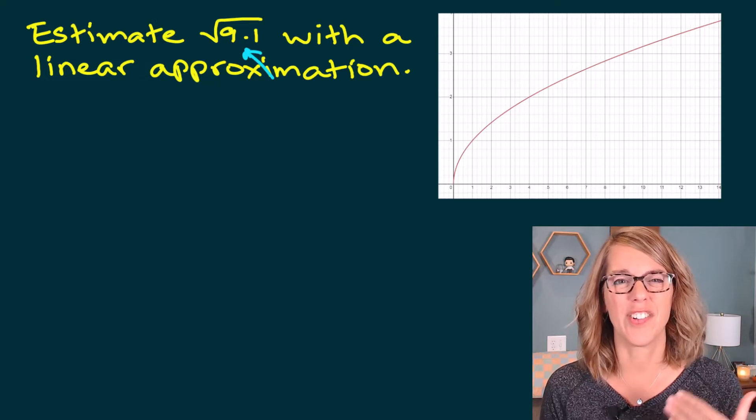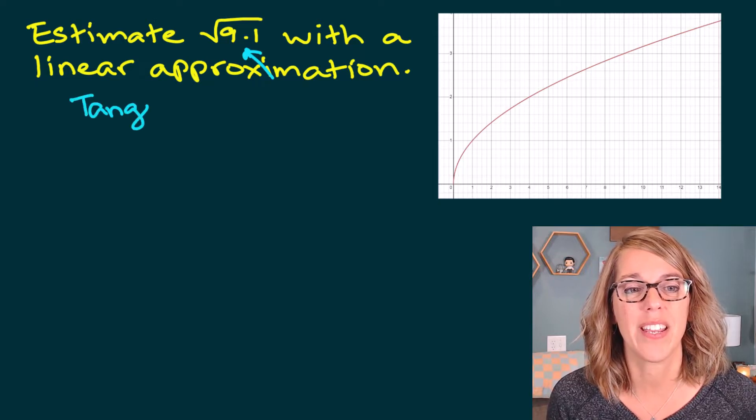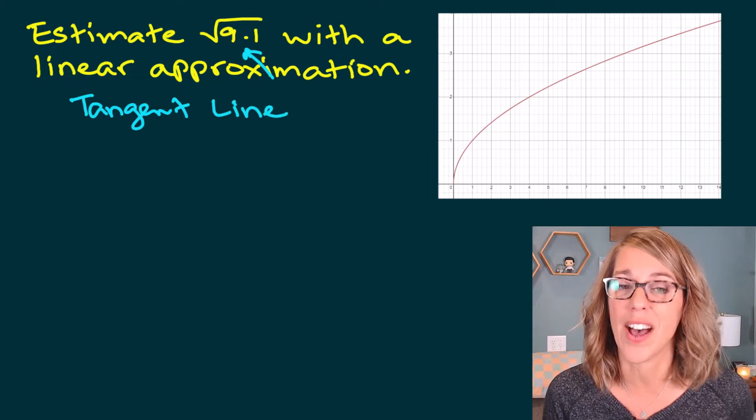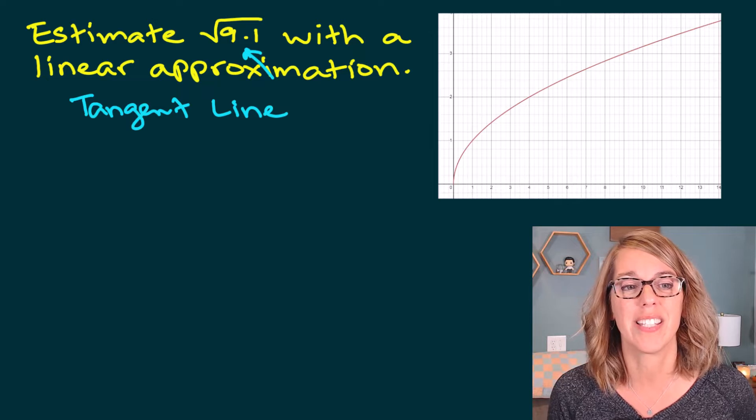A linear approximation is just another way of saying the tangent line. So we need a function and we need a nice nearby value to 9.1. Well, I can see that my function is the square root.